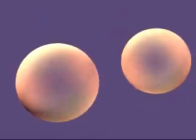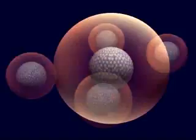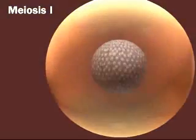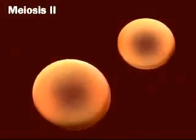Meiosis consists of two consecutive nuclear divisions per round of DNA replication. The two, called meiosis I and meiosis II, result in four haploid nuclei.